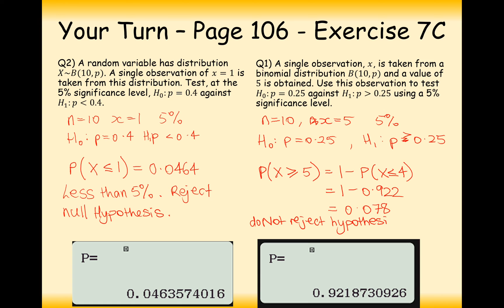There's a 7.8% chance that under P = 0.25, they would score 5 or more, so there's enough variation in the data to account for scoring 5 goals. We do not reject the null hypothesis. Thanks very much for watching — have plenty of practice on Exercise 7C, persevere through the difficult ones, and ask your teacher for help if you need any.